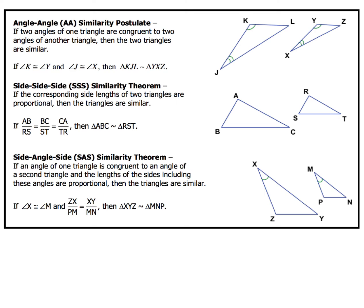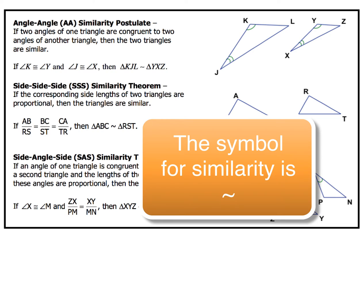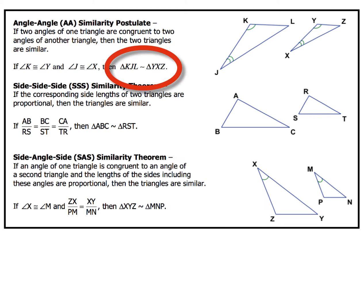Now when you take a look at each one of these, you have to pay very close attention to the symbol, because the symbol in each one of these is not the same as the congruent symbol. So when you write a similarity statement — like in the first one for angle-angle, where it says triangle KJL is similar to triangle YXZ — you really have to pay attention to that symbol, because a lot of times students write it incorrectly.